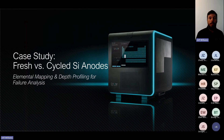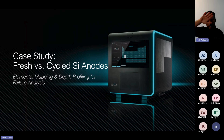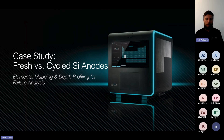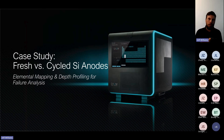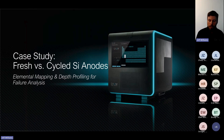We're going to be doing both elemental mapping and depth profiling — what happens on the surface of this anode versus as we go deeper into it. We're going to be looking at what happens when it's perfectly fresh, hasn't been charged or discharged, and what's the difference between charging it really slow and really fast. Can the instrument see the difference?